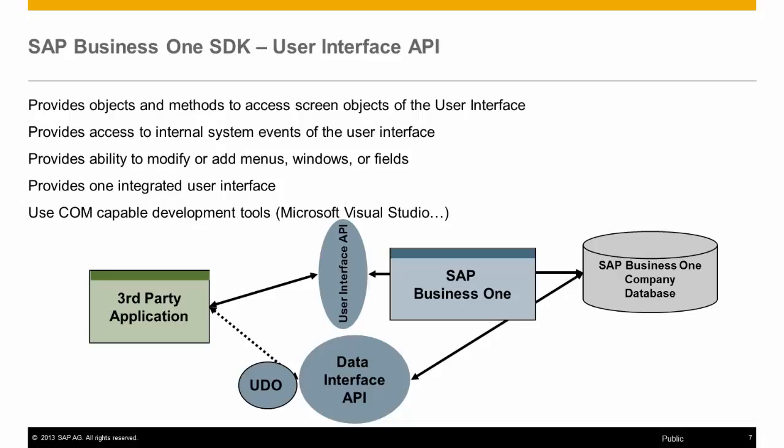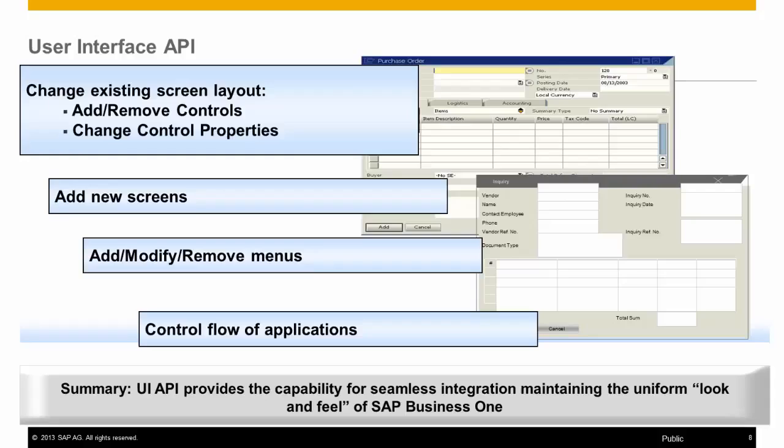The UI API, or User Interface API, is used to modify existing SAP Business One system forms or create new forms, as well as capture system events programmatically. The UI API allows for the ability to change existing system forms as well as add new forms, add, modify, and remove menu items, and control the flow of applications. Examples would be to add new fields or buttons to a system form such as sales orders.